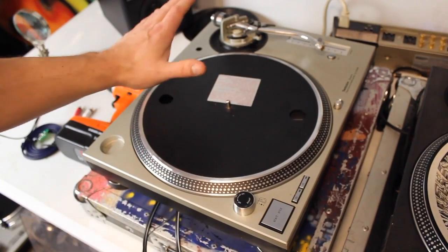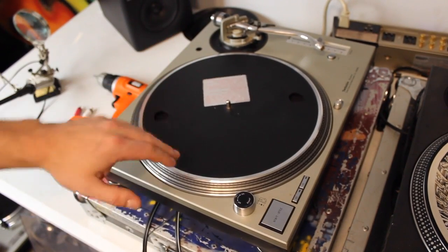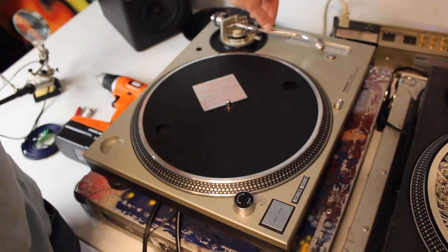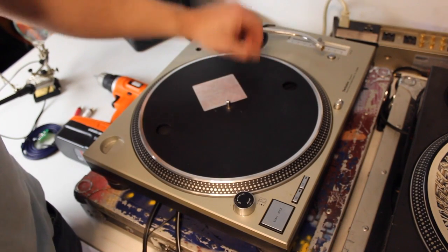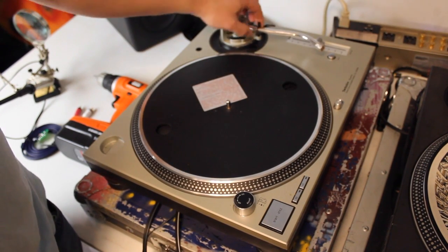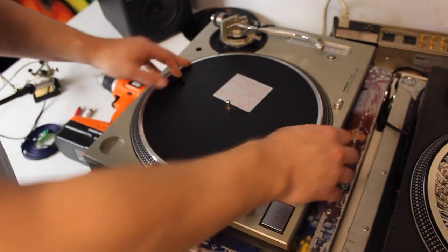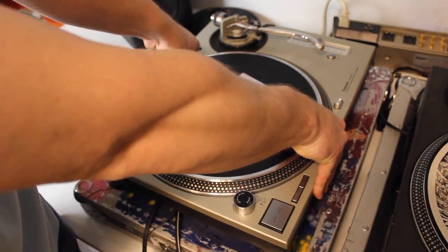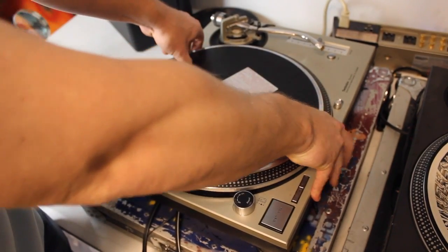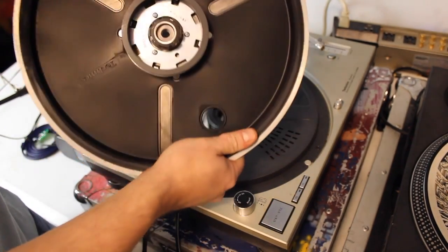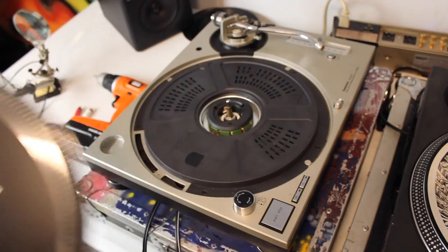One of the things you want to do is you make sure, obviously, the record's gone, slip mat's gone. I've gone ahead and taken the needle and head shell off, and then you want to make sure that the tone arm is fastened here so it doesn't move around while you're doing this. And then you just want to take your platter off. I like to stick my thumbs in there, just pull up. Usually comes off pretty easily, and that part is done.